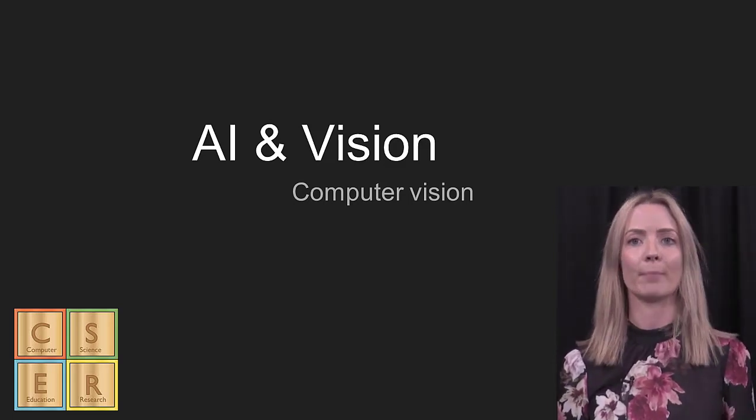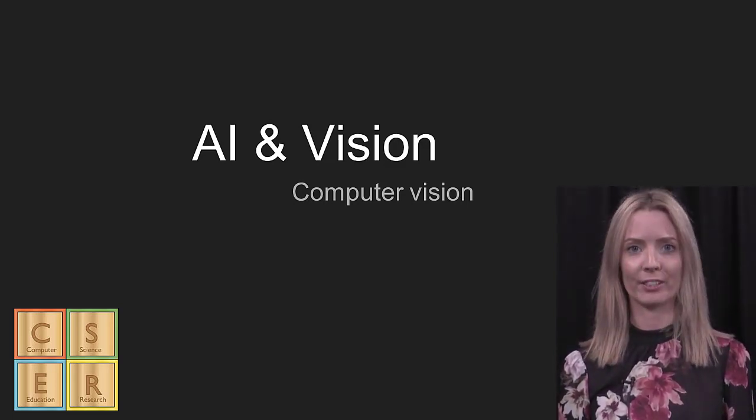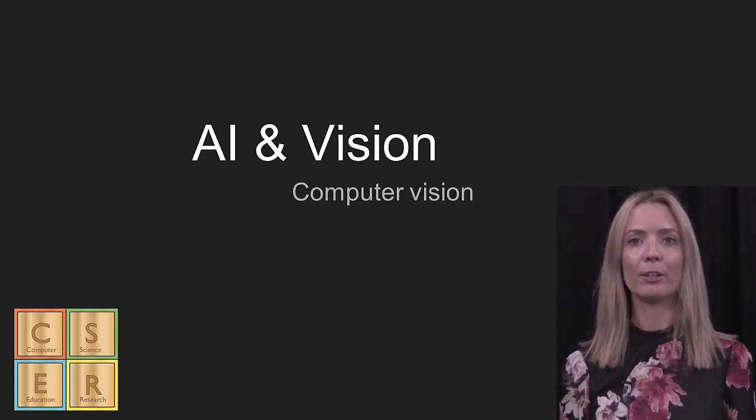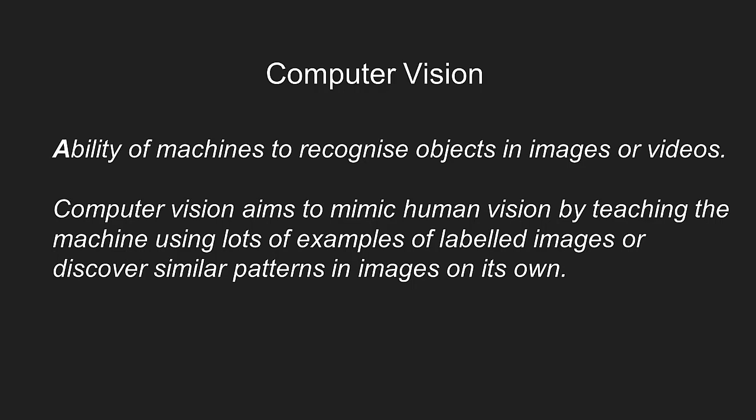This video is about computer vision. Computer vision is the ability for machines to recognise objects in images or videos. Computer vision aims to mimic human vision by teaching the machine to discover patterns and learn to recognise objects on its own using many examples of images, either labelled or unlabelled.